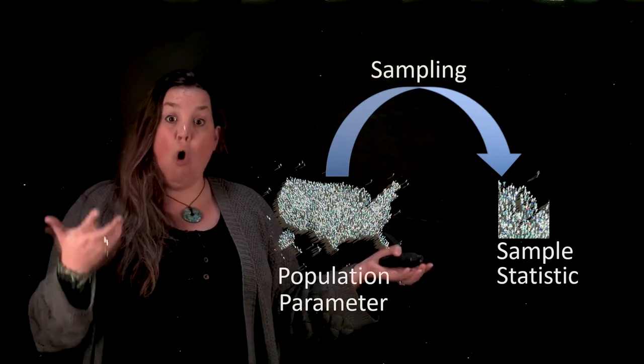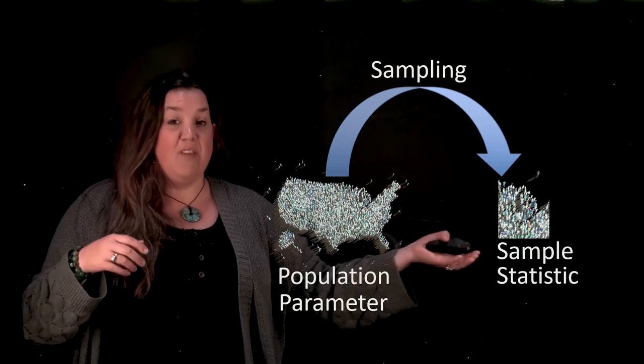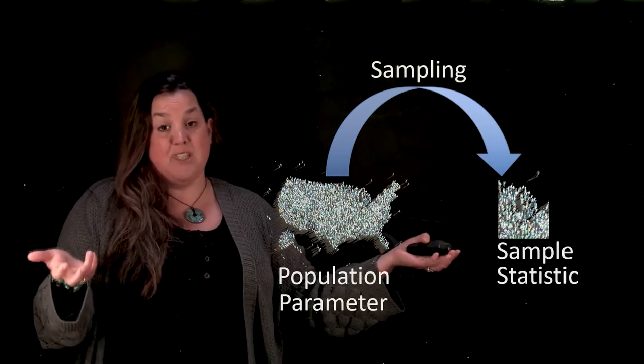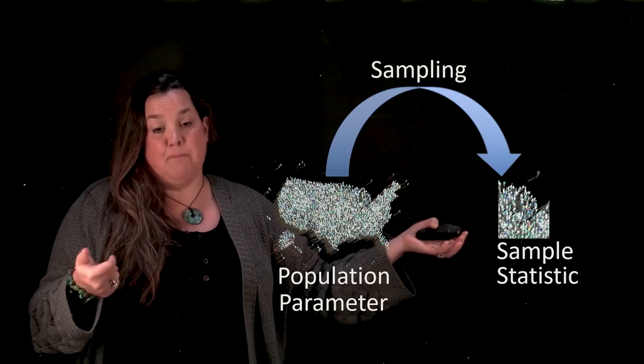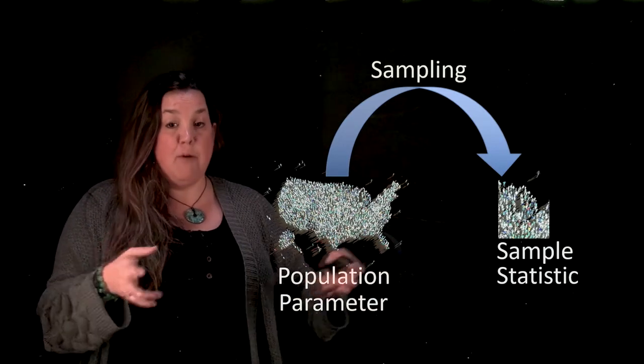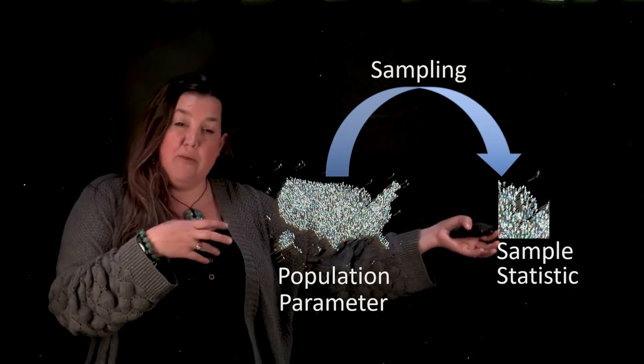The population is all, whole, or entire, but the sample is going to be part or some or a subset or a number that's quite obviously smaller than the population. So population is everybody, a sample is part of that bigger group.